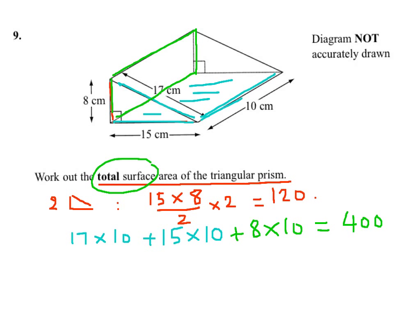So the total surface area will be 120 plus 400, which is 520 centimeters squared. That's your final answer.